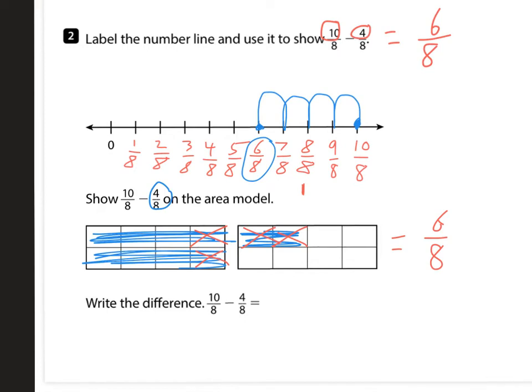And then finally, write the difference. So we've done that a few times. Our denominators stay the same. 10 minus 4 will give me 6. 6 eighths is my difference. And if we want to get this in the simplest form, what goes into the numerator and the denominator evenly? 2. So we divide each one by 2. And we will get 3 fourths.